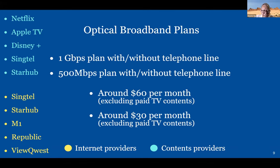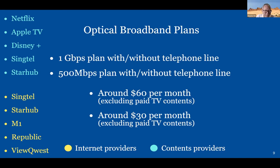In Singapore, optical broadband can be requested from five approved licensed companies. You cannot get your internet connection from persons who are not approved — unless you are a very big company that can put a satellite dish. For normal people, we have to go through any of these companies — they are called internet providers. Internet providers sometimes also provide contents, like Singtel and StarHub. You can also get Netflix, Apple TV, and Disney Plus — all paid channels.